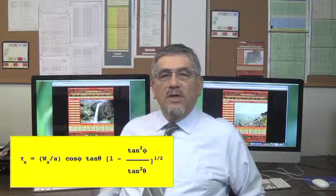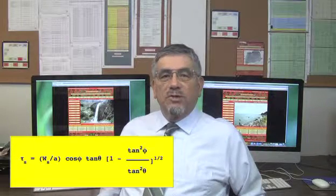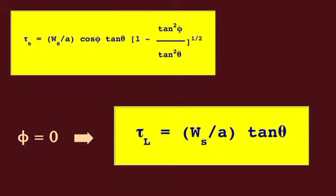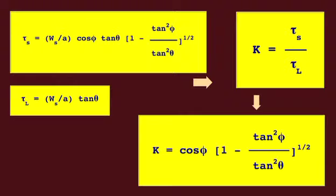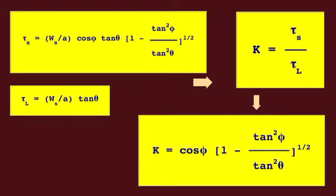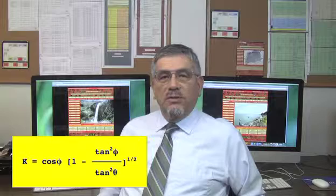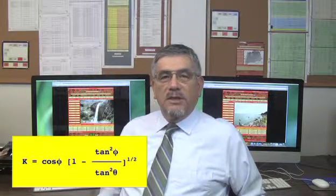On the level surface, with phi equal to zero, the tractive stress reduces to the simplified form. The tractive force ratio is K equals cos phi times the square root of one minus tan squared phi over tan squared theta. This formula is reduced by using the appropriate trigonometric identities.